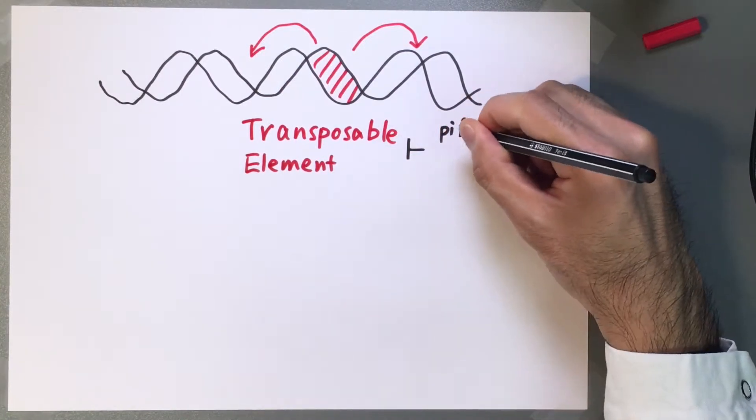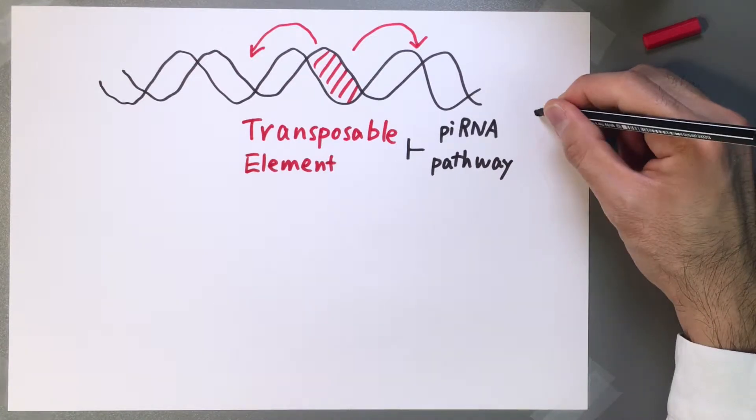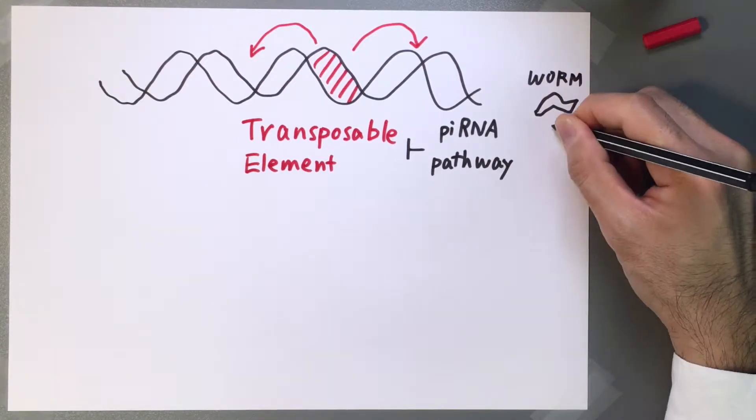To prevent this, animals evolved a small RNA silencing system called the piRNA pathway. This pathway is conserved from worms to humans.